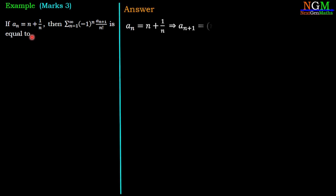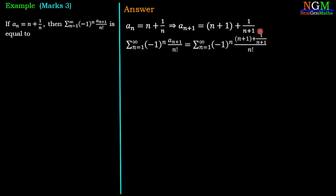We are given A_n = (n+1)/n and we require A_{n+1}. To find that, we replace n by n+1, then we have (n+1+1)/(n+1). Now substitute that value in the summation: Σ (n=1 to ∞) (-1)^n · (n+2)/(n+1) divided by n factorial.